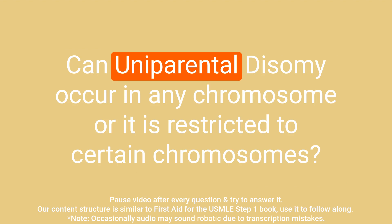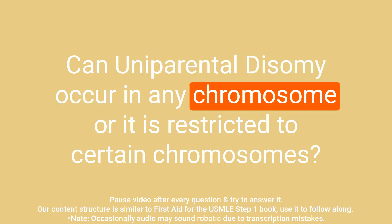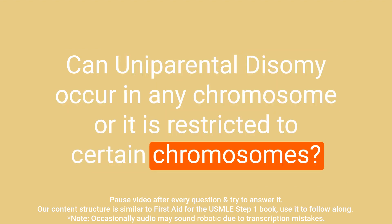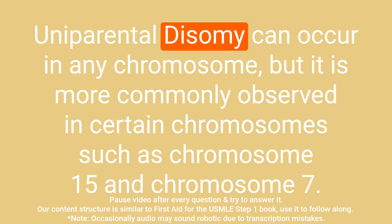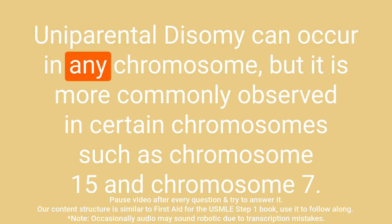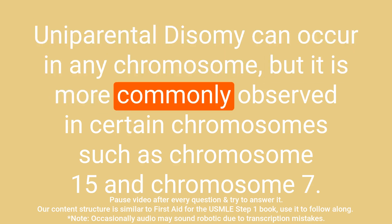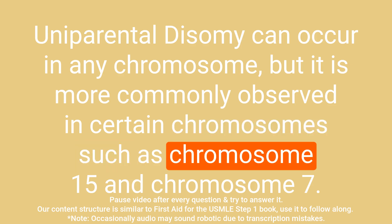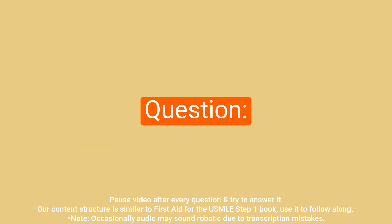Question: Can uniparental disomy occur in any chromosome, or is it restricted to certain chromosomes? Answer: Uniparental disomy can occur in any chromosome, but it is more commonly observed in certain chromosomes such as chromosome 15 and chromosome 7.